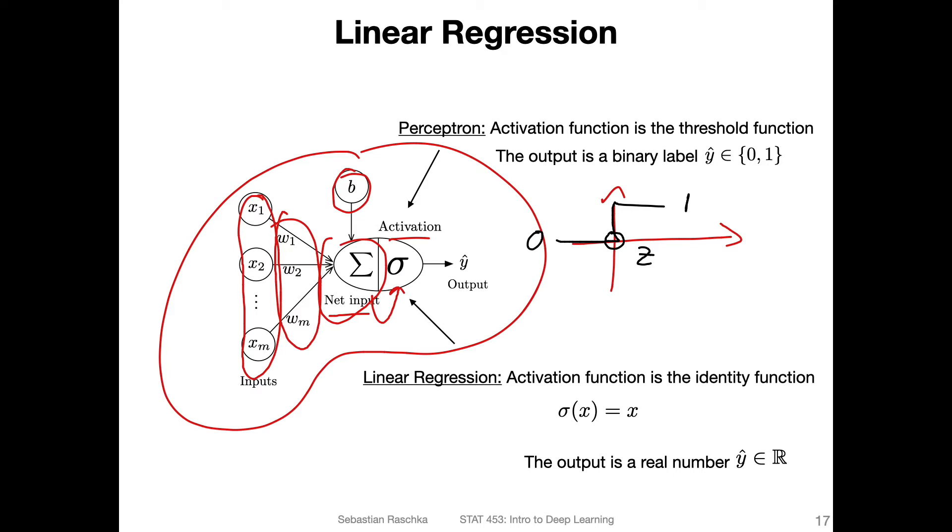In the case of linear regression, we don't have such a prediction. We only return a continuous value, so there's no threshold for zero and one. You can think of the activation function in the perceptron being replaced by the identity function, which is just a pass-through. If the input is x to this function, it will also return x.